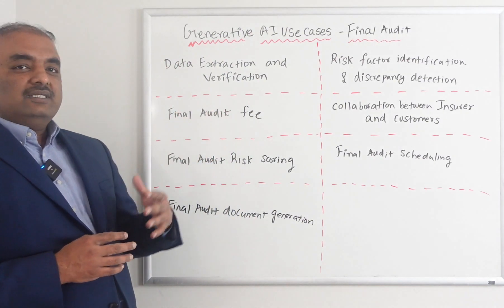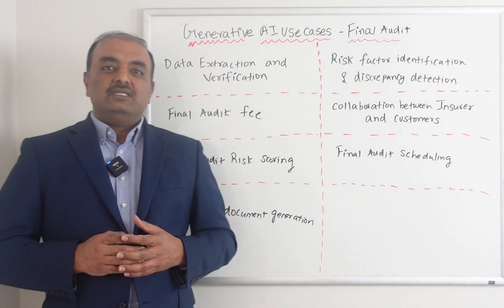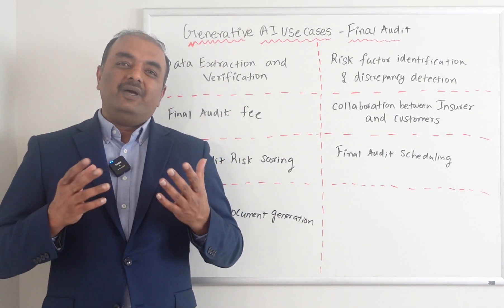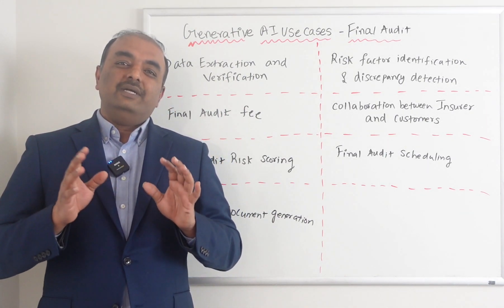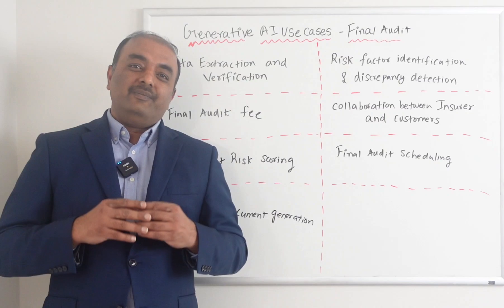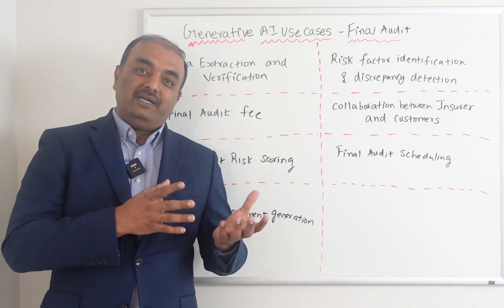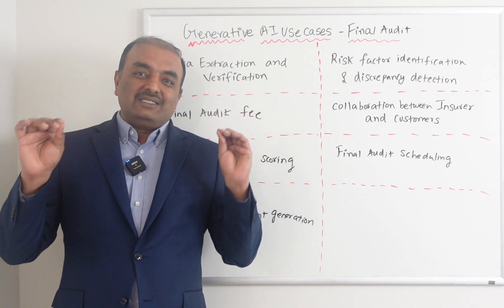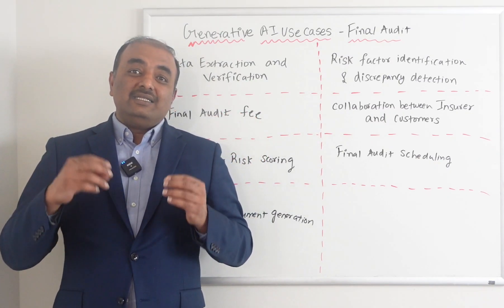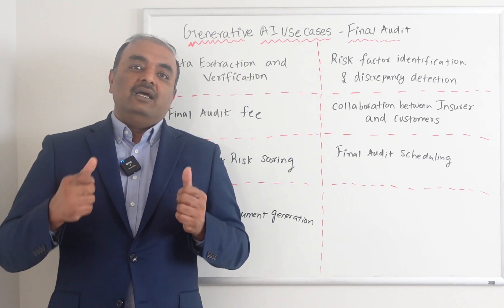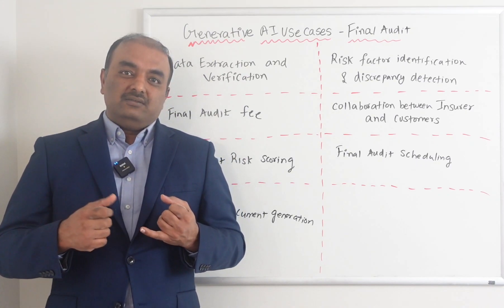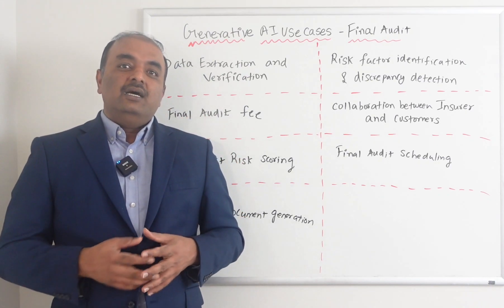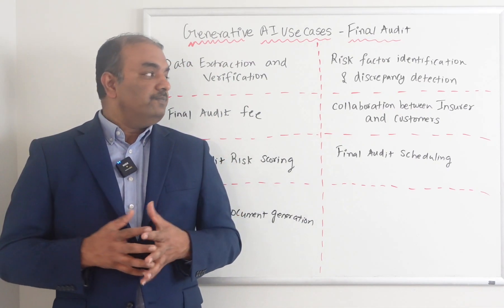The fifth use case is risk factor identification and discrepancy detection. Sometimes, unknowingly, employers can provide data that does not match the actual data. With AI having access to different data sources, it can easily detect fraudulent activity or genuine mistakes and correct those mistakes easily.